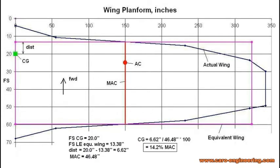The center of gravity position of an airplane is expressed in percent wing MAC. I have drawn in the CG at a fuselage station of 20 inches. The equivalent wing leading edge is at the 13.38 inch station, so the CG is 6.62 inches aft of the equivalent wing leading edge. We divide this by MAC and get 0.142 or 14.2 percent.